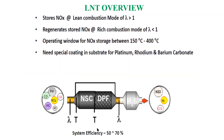The SCR system looks complex, so the alternative to SCR is the LNT — the Lean NOx Trap. The efficiency of the LNT is only between 50 to 70 percent, but the cost is also reduced. It reduces NOx to nitrogen and water, but the amount of NOx coming out is slightly higher than with SCR. The LNT stores nitrogen oxide emissions when the engine is running in lean mode, and regenerates when the engine is running in rich mode. The operating temperature is between 150 to 400 degrees Celsius.